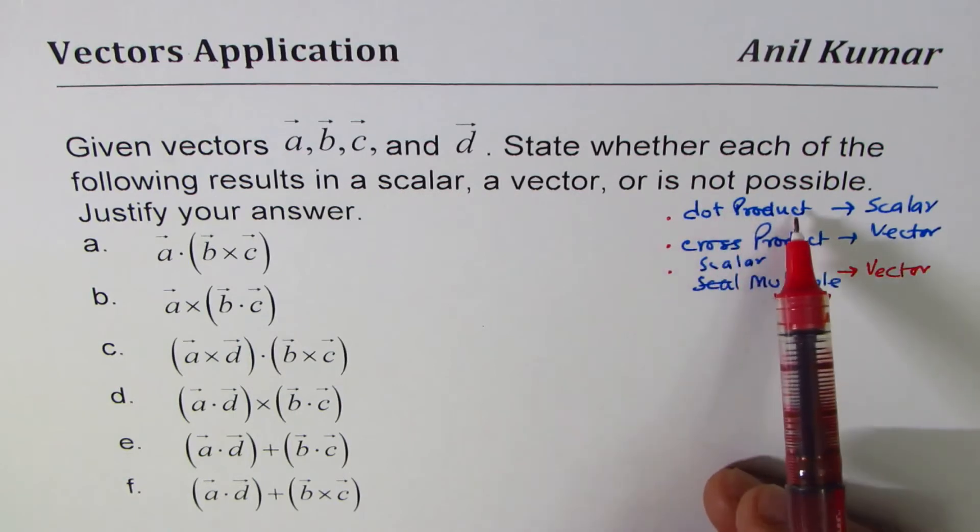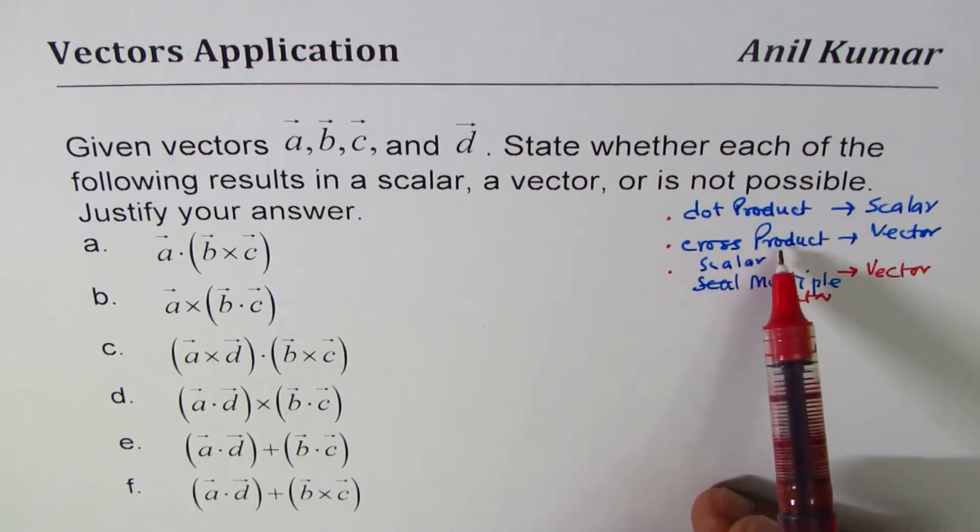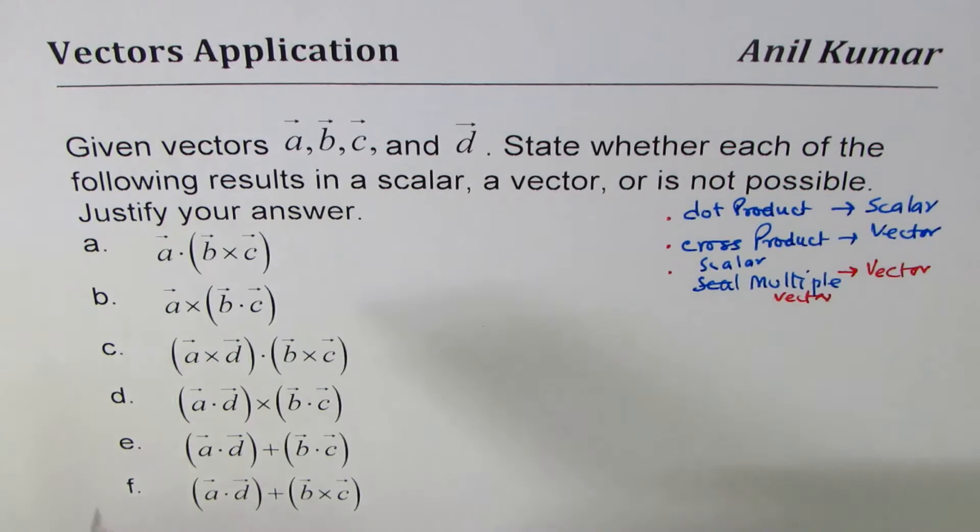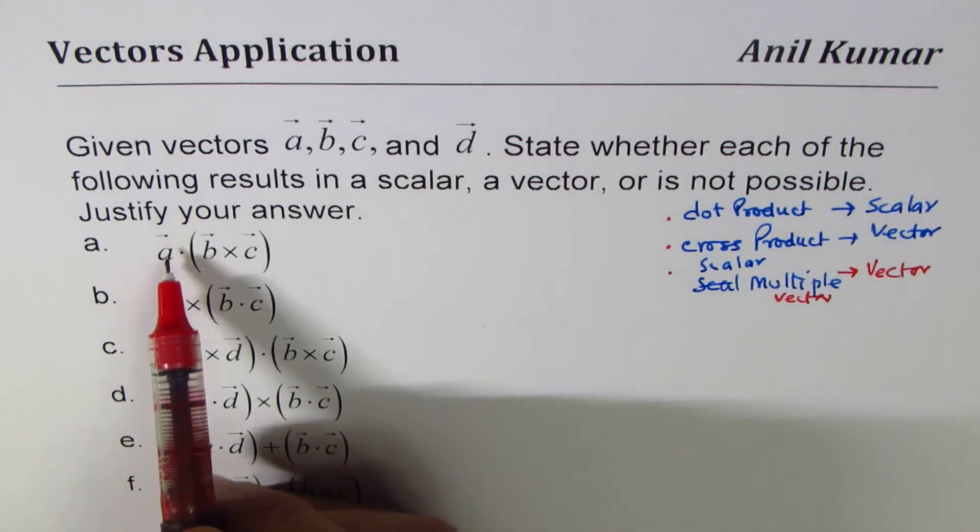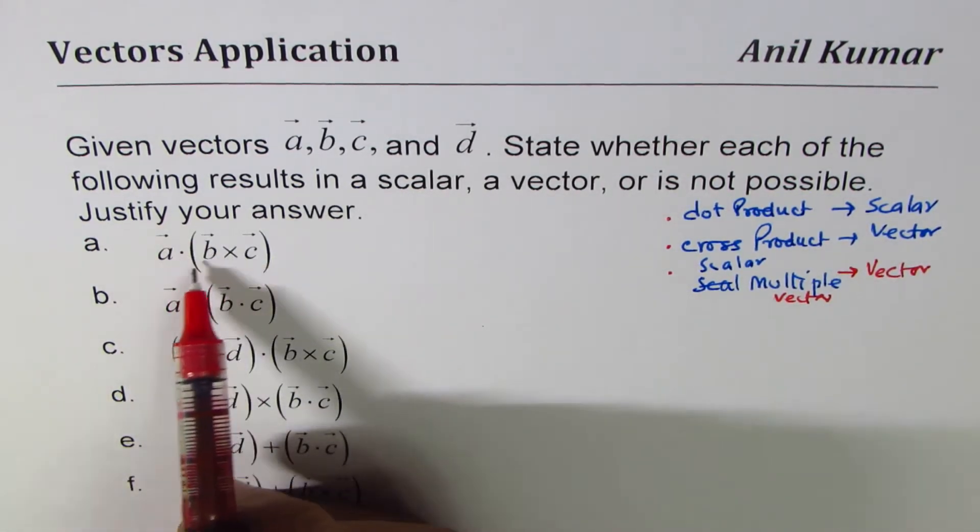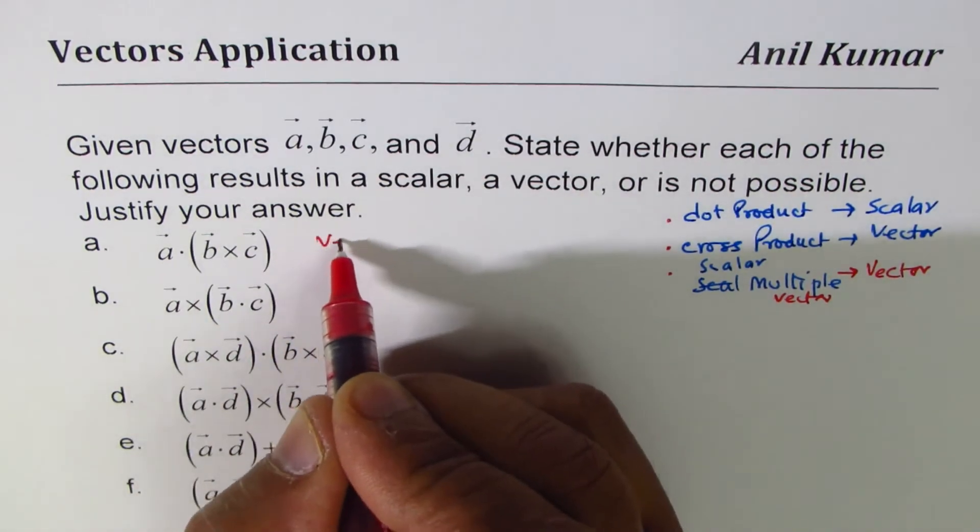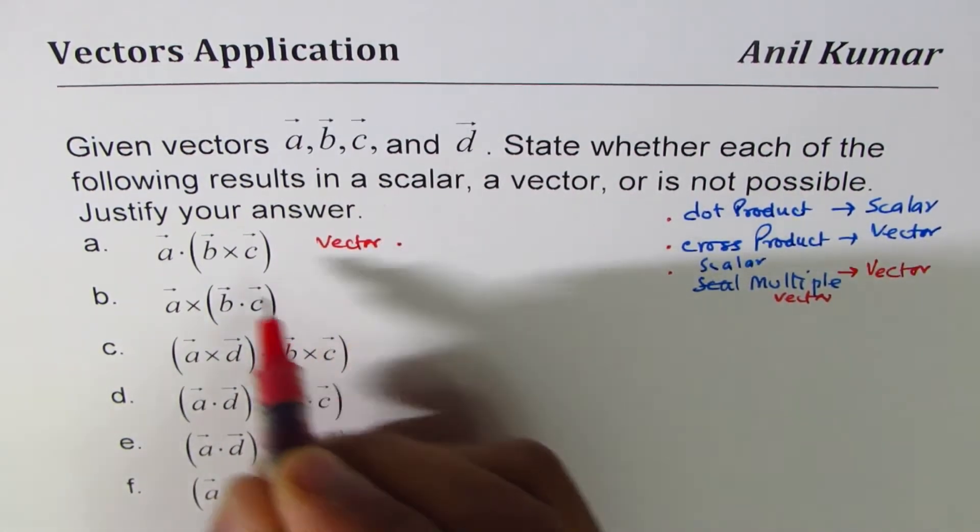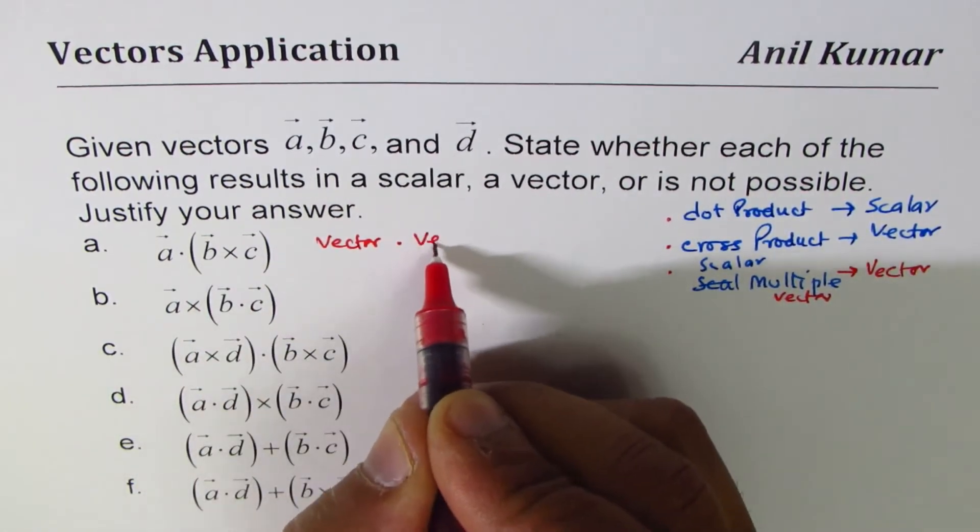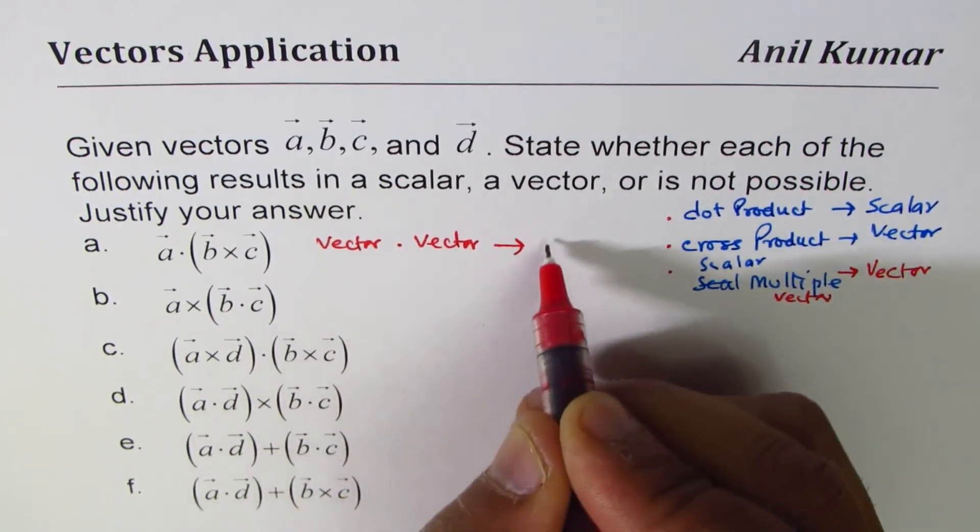When we have a·(b×c), b×c is a vector, so we have a vector · b×c which is also a vector, and that gives me scalar.